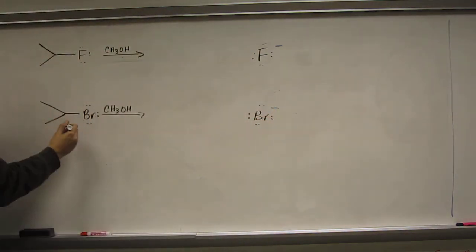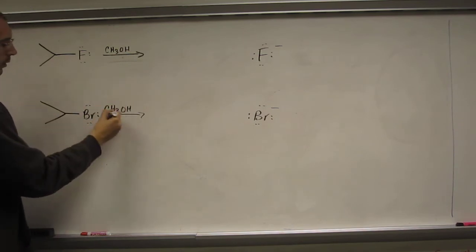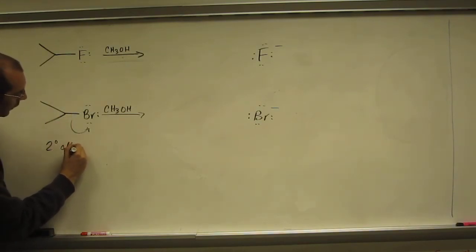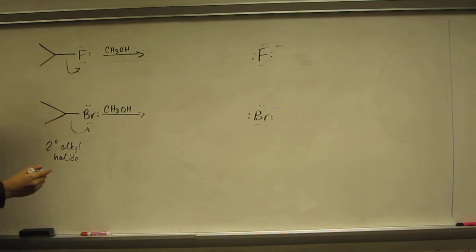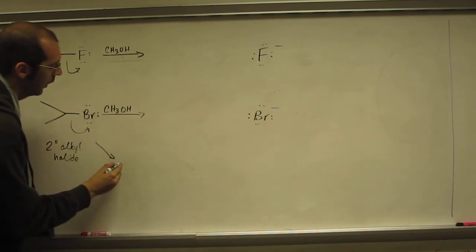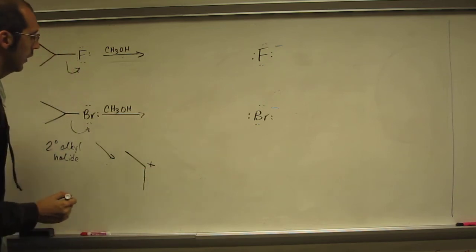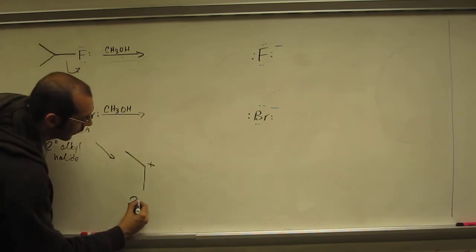What's going to happen, this is polar solvent, so that's going to lose the leaving group because we've got a secondary alkyl halide, and the mechanism, of course, would be very similar for this one, it's just the F instead of the Br, and what we would make effectively is this secondary carbocation.